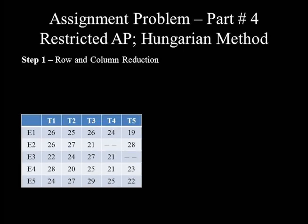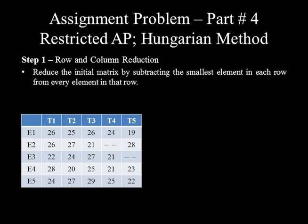Step 1: row and column reduction. As the first sub-step, reduce the initial matrix by subtracting the smallest element in each row from every element in that row. Before identifying the smallest element in each row, let's replace the broken lines in the matrix with the symbol of infinity.